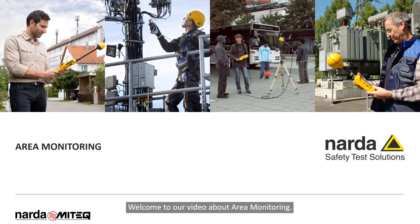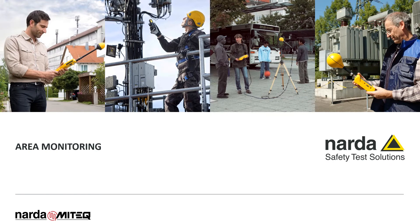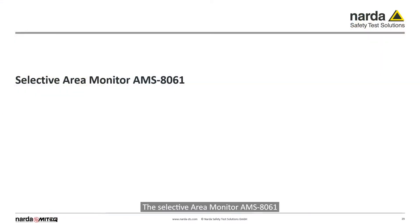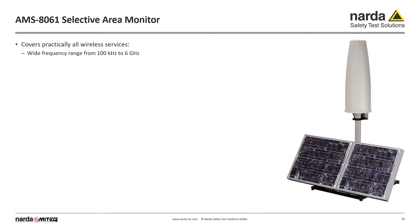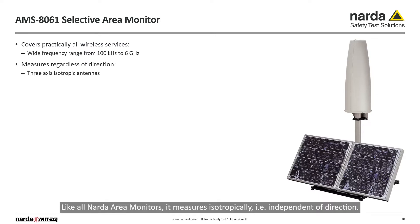Welcome to our video about area monitoring. The Selective Area Monitor AMS 8061. The 100 kHz to 6 GHz frequency range of the Selective Area Monitor 8061 covers all the currently installed communication frequencies. Like all other area monitors, it measures isotropically. This means independent of direction.